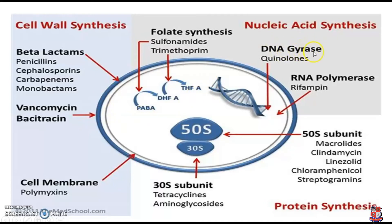Similarly, the DNA gyrase inhibitors — the main example being quinolones — are responsible for the replication of DNA. When DNA replication and multiplication occur, this drives bacterial development. Quinolones inhibit DNA gyrase, thereby inhibiting nucleic acid synthesis. The RNA polymerase is also responsible for bacterial multiplication; rifampicin inhibits the RNA polymerase enzyme, preventing multiplication.